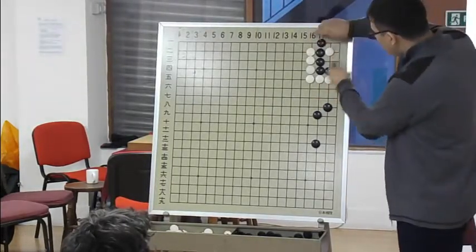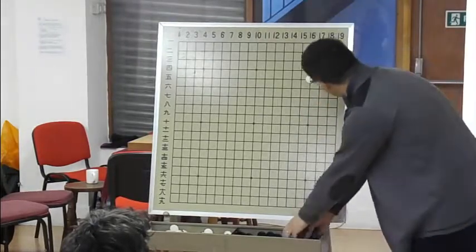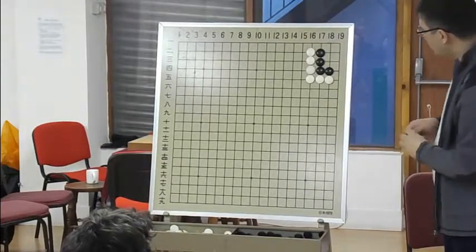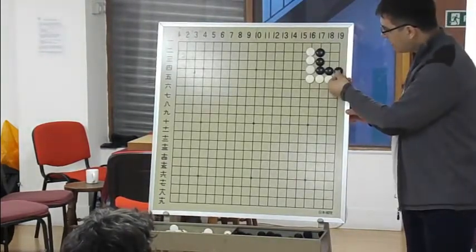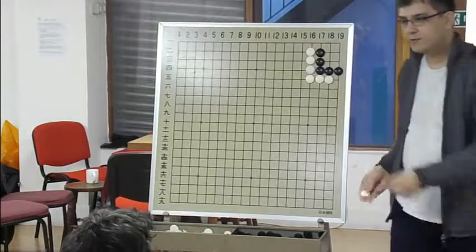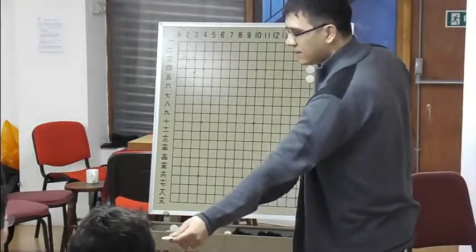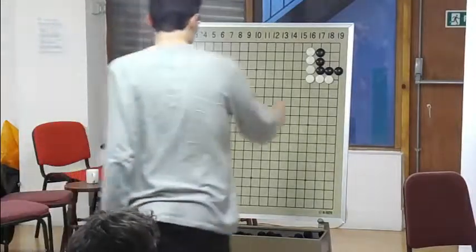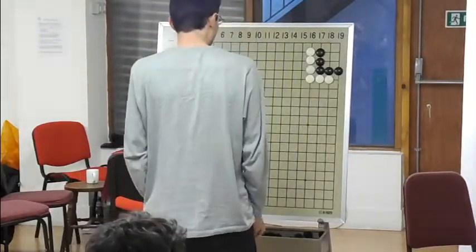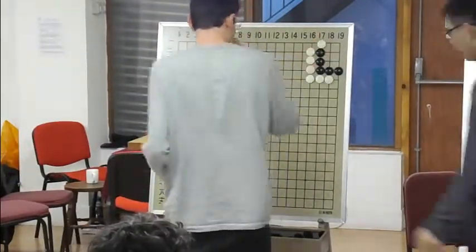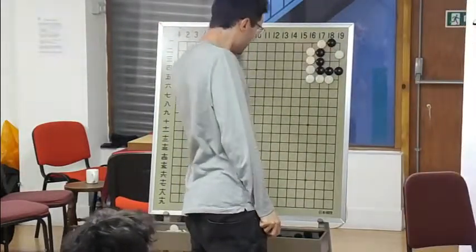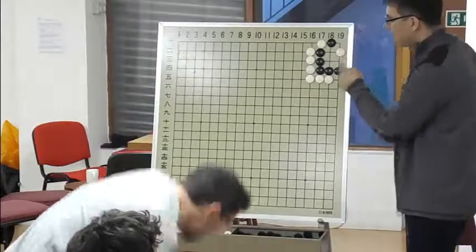If we start like this and play here, even if black captures, white can play here, or not here because there is a ko. We just play like this, and then black is dead. So you see the difference? The wrong way to kill this shape can fail sometimes. That's why it's important to remember the proper technique.